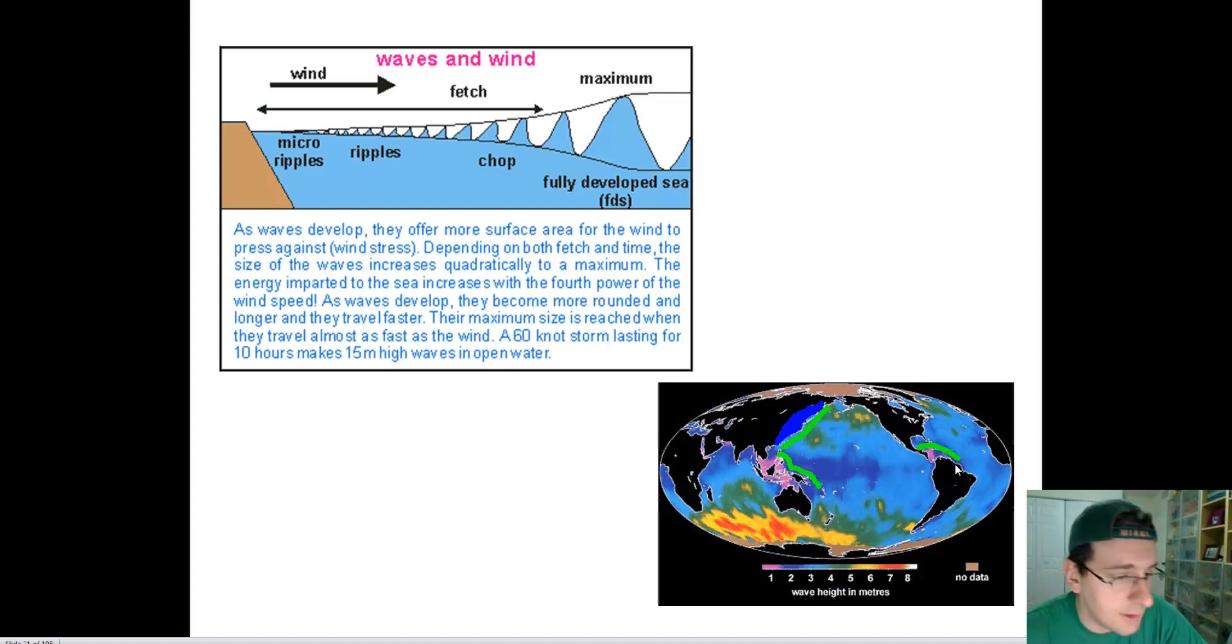Meanwhile, in the Bering Sea, you're going to have very strong storms leading up to the Bering Sea, and so you're going to have this stronger wave pattern here. But then after the Alaskan Islands, you're not going to have that many waves. So you see how the islands act like barriers that block the wave height.